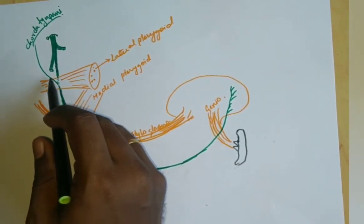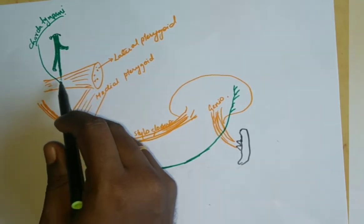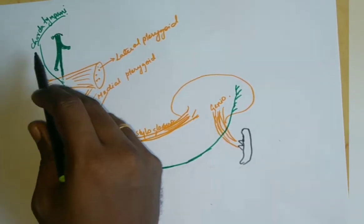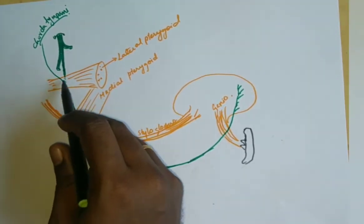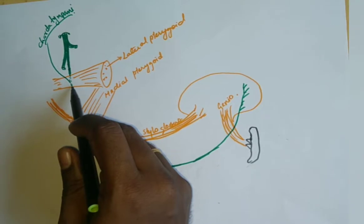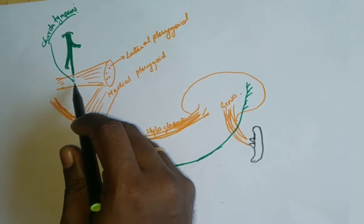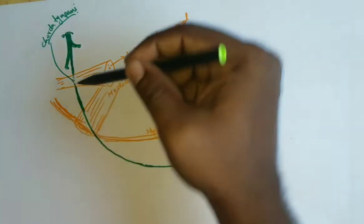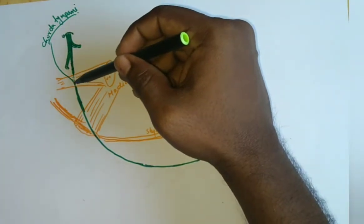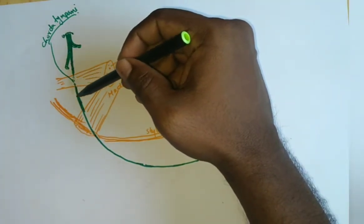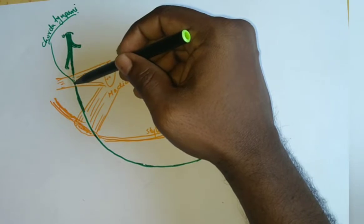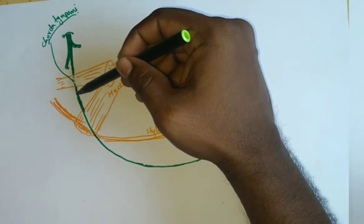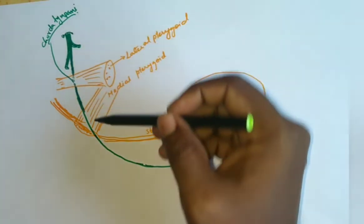When it is passing deep to the lateral pterygoid, it is joined by the chorda tympani branch of the facial nerve. The chorda tympani carries the taste sensation and also carries the secretomotor fibers to the sublingual and submandibular glands.